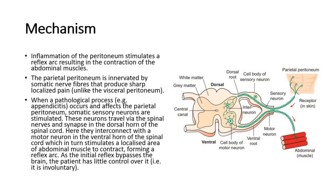The parietal peritoneum is innervated by somatic nerve fibers that produce sharp localized pain, unlike the visceral peritoneum. When a pathological process like appendicitis occurs and affects the parietal peritoneum, somatic sensory neurons are stimulated. These neurons travel via the spinal nerves and synapse in the dorsal horn of the spinal cord.